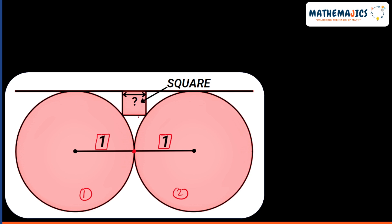What we need to find out in this question is the side length of this square — this question mark. I'm assuming the side length of the square to be x, so we need to find the value of x. For that, we need to draw a few lines which will help us to solve this question.